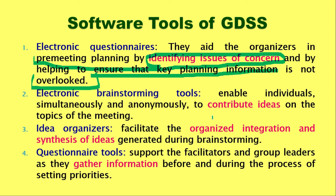Through electronic questionnaires, we identify the key issues and topics to discuss. The second tool is electronic brainstorming tools, where every attendee gives their own idea simultaneously, anonymously, and spontaneously during the meeting, very openly — enabling the collection and contribution of ideas from all participants in real time.